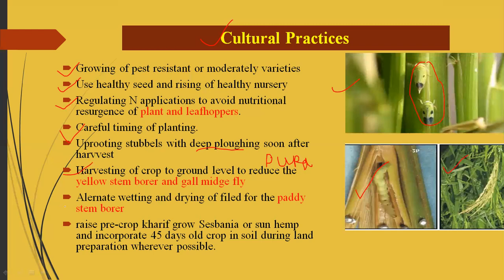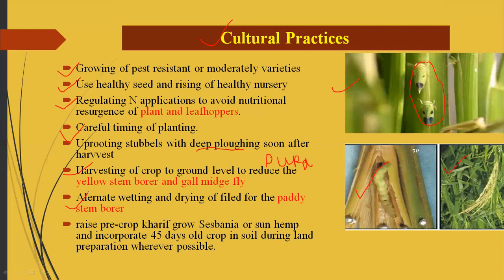Alternate wetting and drying practices are also recommended in paddy fields against paddy stem borer and leaf hoppers. Raise a pre-crop Kharif Sesbania as a trap crop for 45 days in soil during land preparation wherever possible.